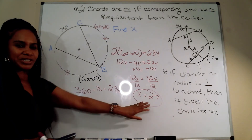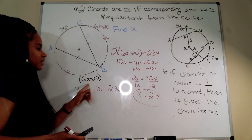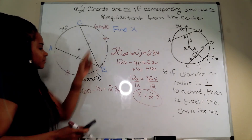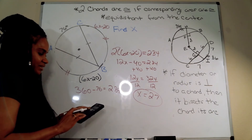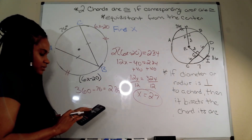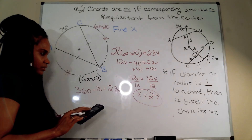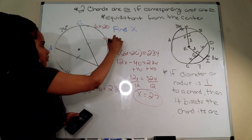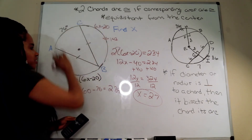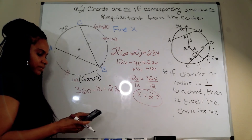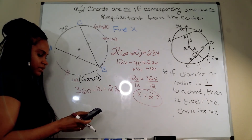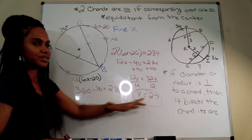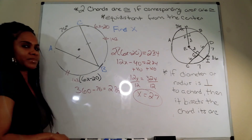To double-check, I plug x equals 27 back in: 6 times 27 minus 20 equals 162 minus 20 equals 142. So each arc is 142 degrees. Adding both arcs and the given arc: 142 plus 142 plus 76 equals 360 degrees. That confirms x equals 27 is correct.